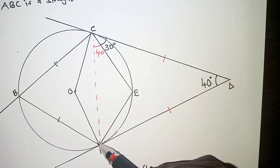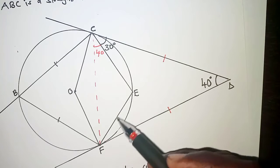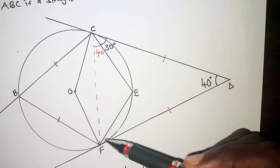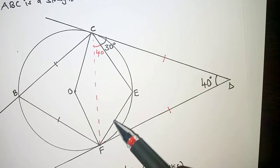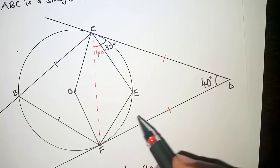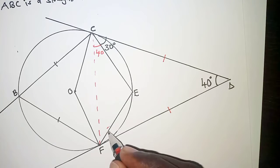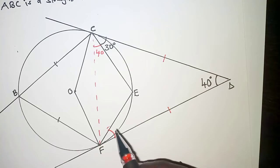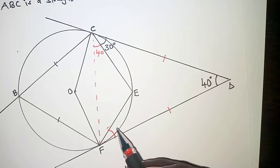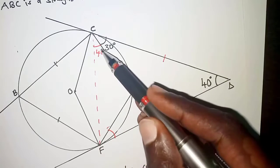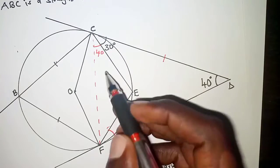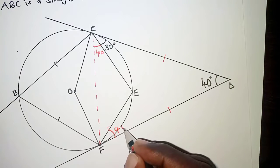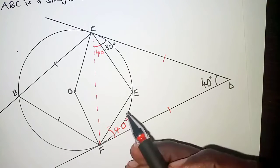We also have chord FE. Using the property that angles in alternate segments are equal, the 40-degree angle at C corresponds to this angle here, which is also 40 degrees.